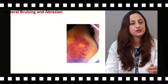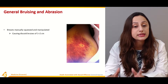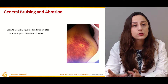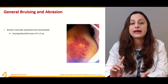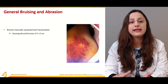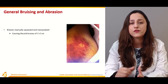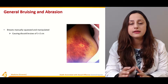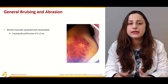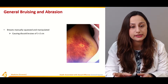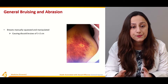General bruising and abrasions — for example, the breast may be manually squeezed and manipulated, so we can have bruises and abrasions, or even lacerations, if the person performing the act was of some sadistic nature and had some sort of sexual perversion. From such findings, we can even comment upon the mental state of the assailant.